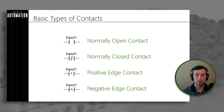Now let's look at the basic types of coils. The most basic type is just a standard coil. When it receives power flow from the left-hand side, it's going to turn on. In this case, output six is tied to this coil — if we receive power flow from the left, output six comes on, and if we lose power flow, output six goes off. The negated coil is very similar to the normally closed contact — it's the opposite of the standard coil. If we're receiving power flow from the left, it's going to turn off; if we're not receiving power flow, it'll actually turn on output six.